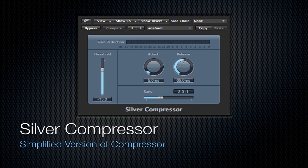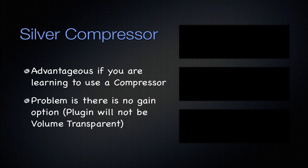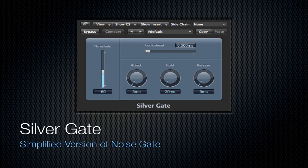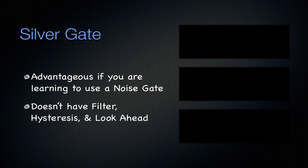Next is going to be the silver compressor. It's a simplified version of the compressor — the silver compressor and silver gate are both simplified versions of their counterparts. It's good if you're just learning to use a compressor, but the problem is there's no gain plugin associated with the silver compressor, so it's not going to be volume transparent — you'll have to add a gain plugin after it. My question is, why not just use a regular compressor? Compression and EQ are the two most important parts in mixing, so just learn how to use the compressor. The silver gate is similarly a simplified version of the noise gate — it's advantageous if you're learning, but it doesn't have a filter, hysteresis, and look-ahead. I would probably just use the noise gate instead.